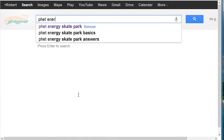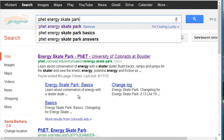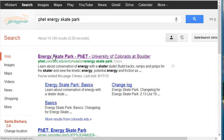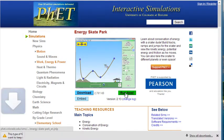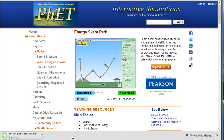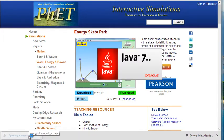Go to Google, type in PhET Energy Skate Park. Pick the first one that comes up. Click Run Now. You'll need to install Java if you haven't yet. It's a free download at java.com.